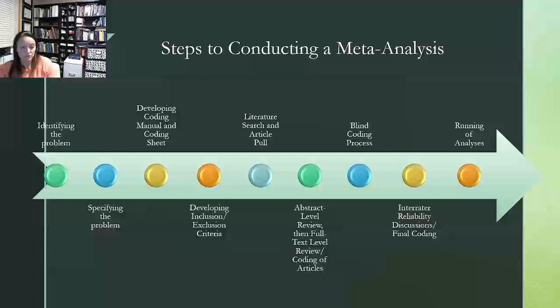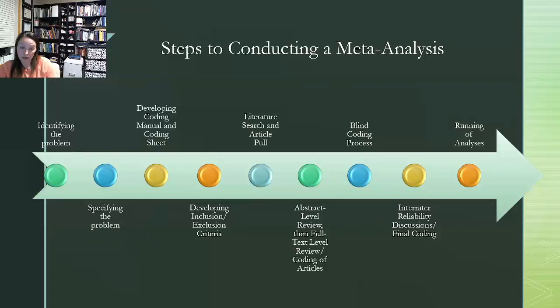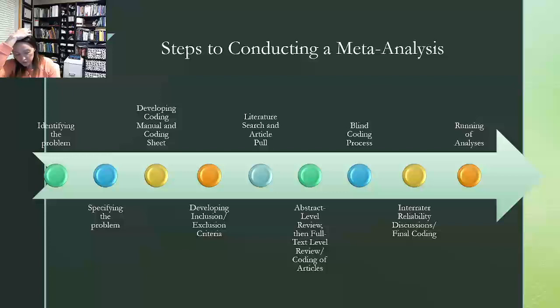Once we've gone through title, then we can review at the abstract level. And in a lot of instances, you can tell by reviewing the abstract if it's going to be a relevant study or if it can be eliminated. And then after we've done abstract review and we're left with full text level review, that is when we are actually using the coding manual and coding that full text in full.